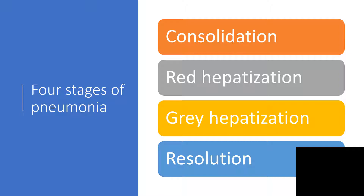I will quickly delve into the four stages of pneumonia. As far as hypostatic pneumonia is concerned, for treatment and all other details, you can check my presentation on pneumonia or aspiration pneumonia. The four stages of pneumonia generally are: consolidation, red hepatization, gray hepatization, and resolution.